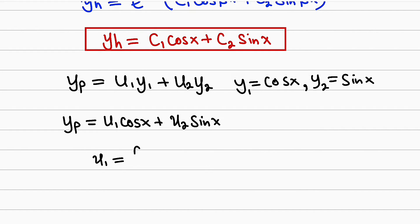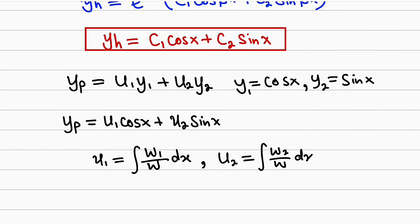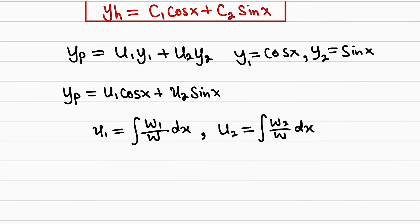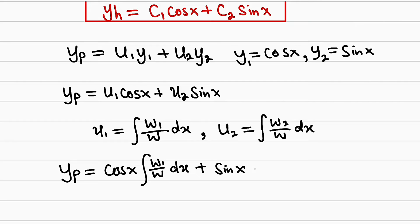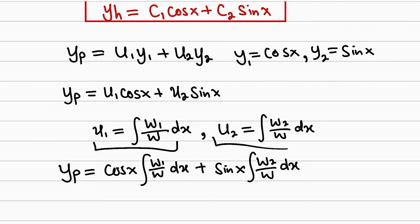u1 = ∫(W1/W) dx and u2 = ∫(W2/W) dx. I will show you how to find W, W1, and W2. Substituting u1 and u2, the particular solution becomes: y_p = cos(x)·∫(W1/W) dx + sin(x)·∫(W2/W) dx.